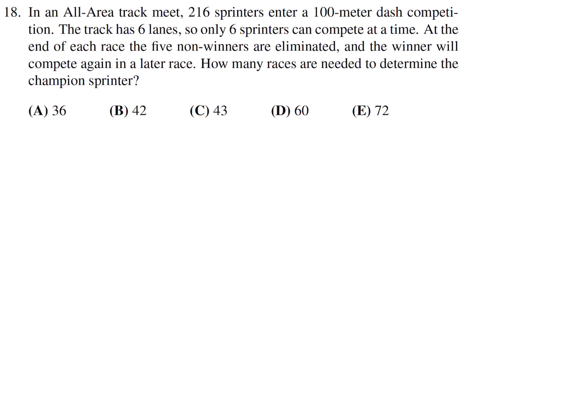In an all-area track meet, 216 sprinters enter a 100-meter dash competition. The track has six lanes, so only six sprinters can compete at a time. At the end of each race, the five non-winners are eliminated, and the winner will compete again in a later race. How many races are needed to determine the champion sprinter? The number of runners in round 1 is 216. Each race can hold six runners, so 216 divided by 6 is 36 races.